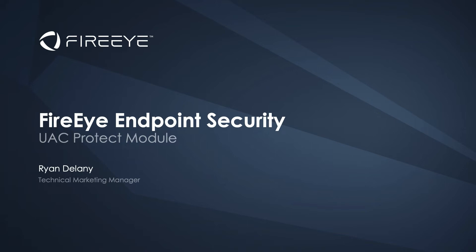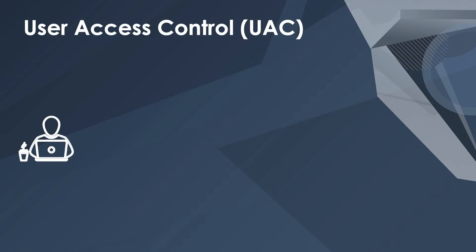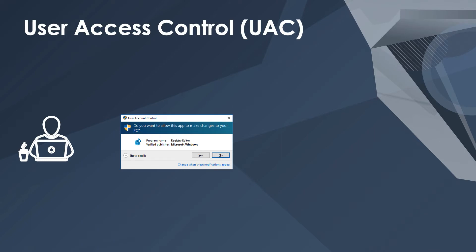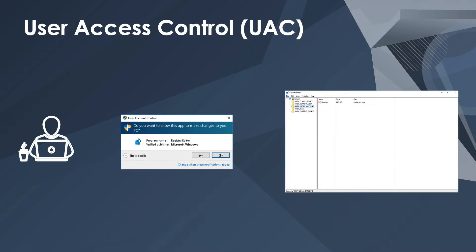In this video, I'll be using the UAC Protect module for FireEye Endpoint Security to detect and block a User Access Control, or UAC, bypass attack. UAC is a Windows feature that provides an additional layer of security via a pop-up acknowledgement when certain programs that require elevated privileges are executed on a machine.